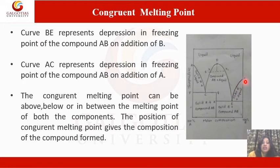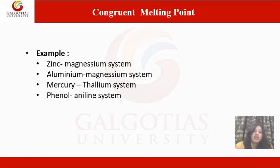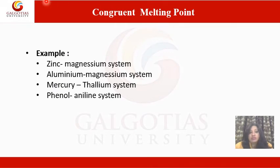The curve BE represents the depression in freezing point of compound AB on the addition of B. Examples of congruent melting point systems include the zinc-magnesium system, aluminum-magnesium system, mercury-thallium system, and phenol-aniline system.